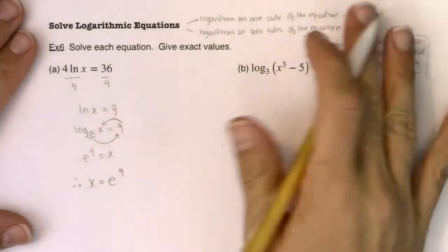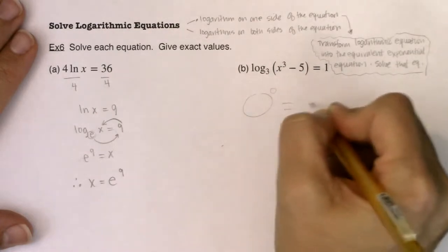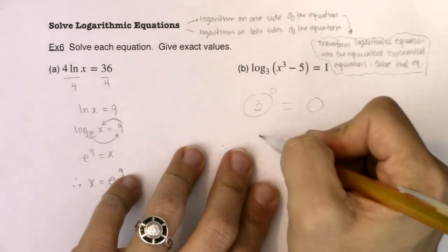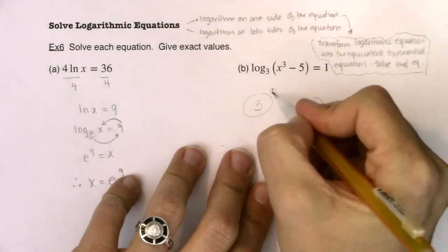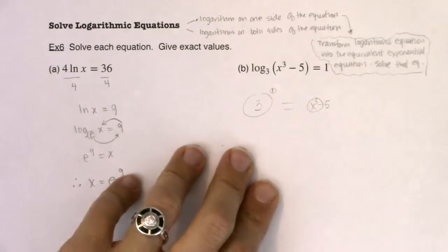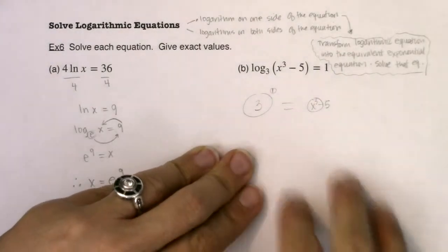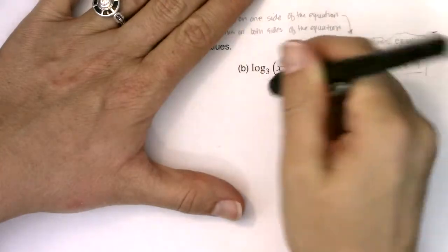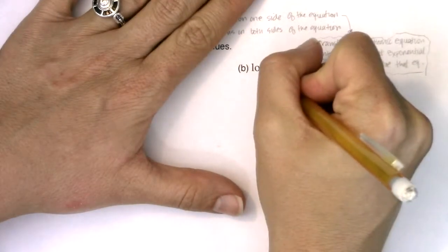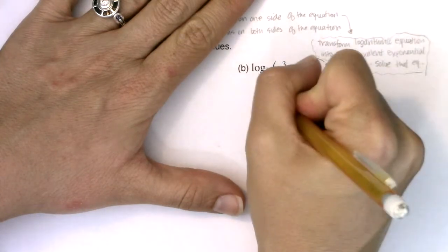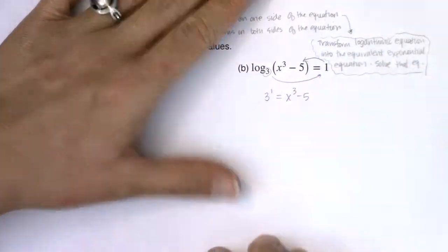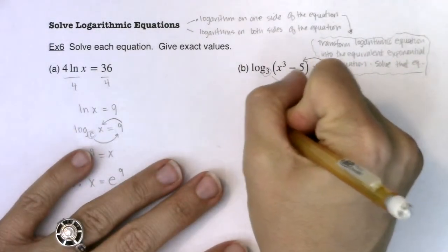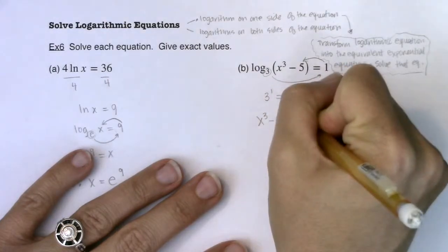For 6b, the logarithmic expression is already isolated, so I want to take this log and write it as an exponential equation. The base of your logarithm will be the base of your power. The logarithm equals the exponent, so the exponent will be 1, and that leaves the argument as x cubed minus 5. Using the circle equation starting at 3: 3 to the 1 equals x cubed minus 5.